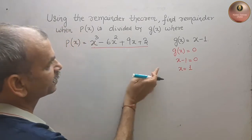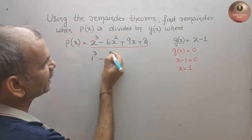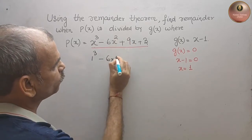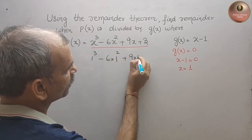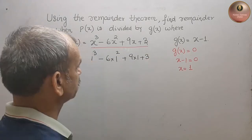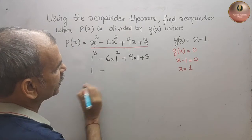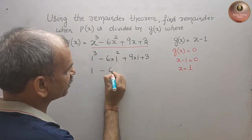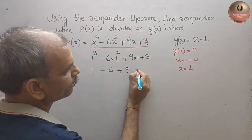We will get x³ means 1³ minus 6x², that means minus 6 into 1² plus 9x means 9 into 1 plus 3. Now solve this. 1³ is 1 minus 6, 1² is 1, 6 into 1 is 6 plus 9 into 1 is 9 plus 3.